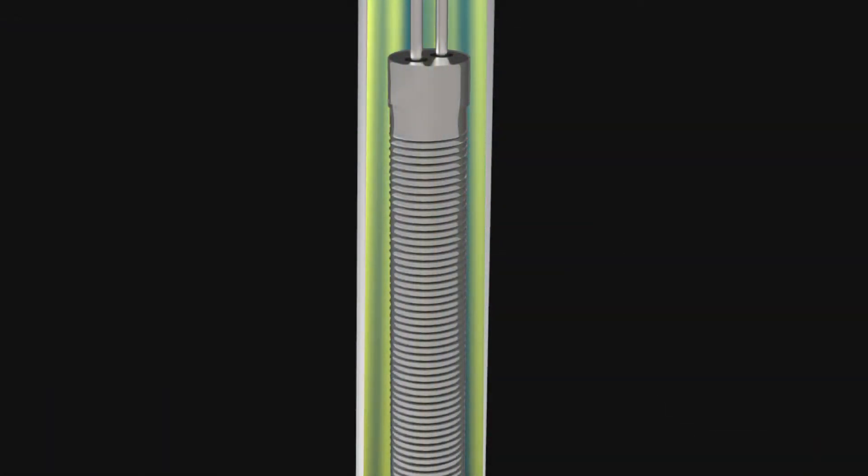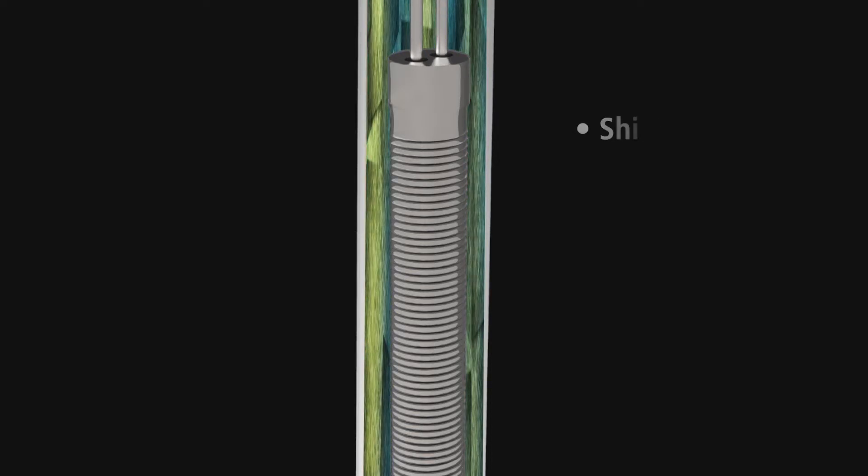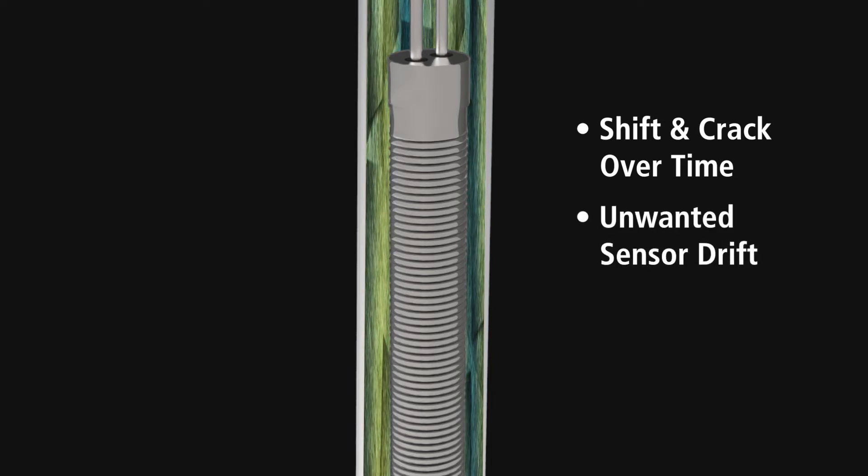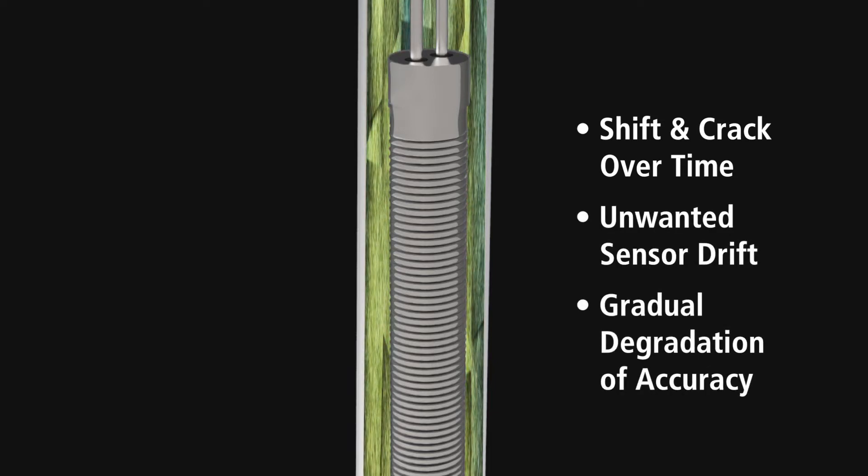Wet thermal sensor design, because of the organic potting cement used, would shift and crack over time, causing unwanted sensor drift, resulting in a gradual degradation of flow measurement accuracy.